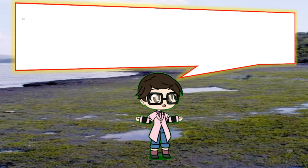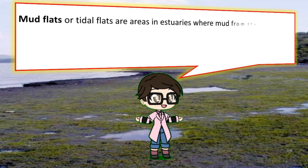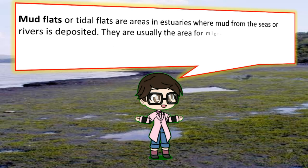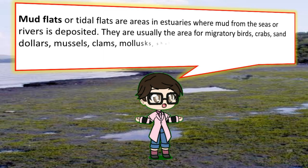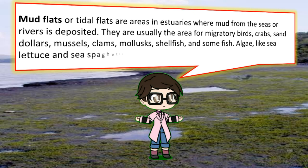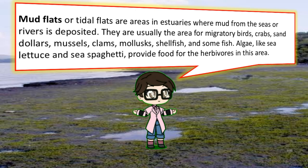Mudflats or tidal flats are areas in estuaries where mud from seas or rivers is deposited. They are usually home to migratory birds, crabs, sand dollars, mussels, clams, mollusks, shellfish, and some fish. Algae like sea lettuce and sea spaghetti provide food for the herbivores in this area.